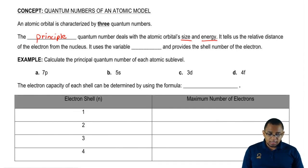It tells us the relative distance of the electron from the nucleus. It uses the variable n, and it tells us the shell number of the electron. We've seen this before where we see n equals 4 or n equals 2.